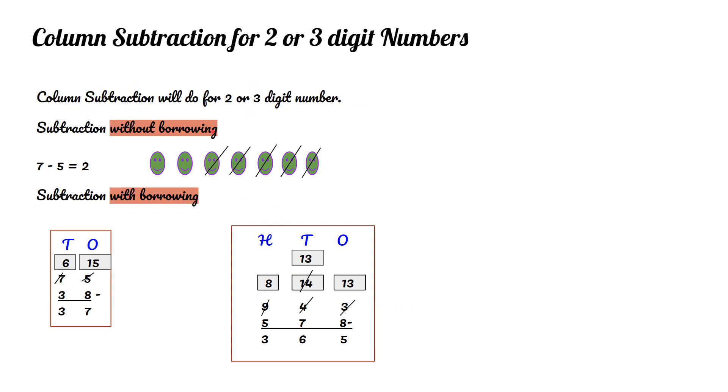Column subtraction for two or three digit numbers. Subtraction without borrowing. 7 minus 5 equals 2. Here we have seven smileys. We cut out five, so the remaining is 2.